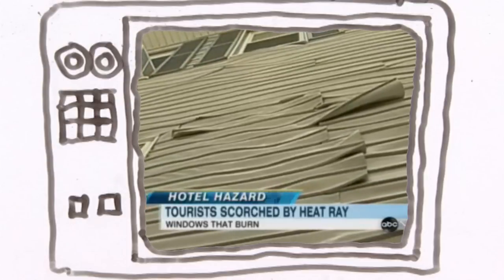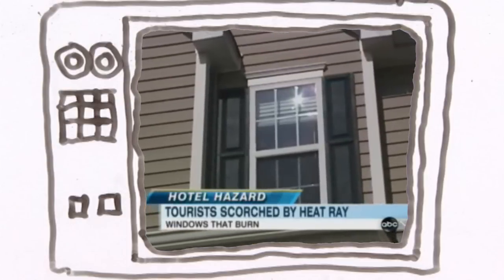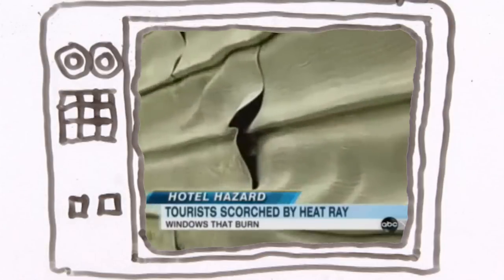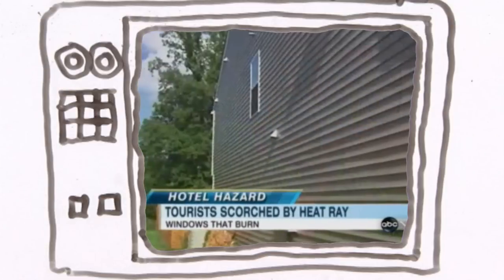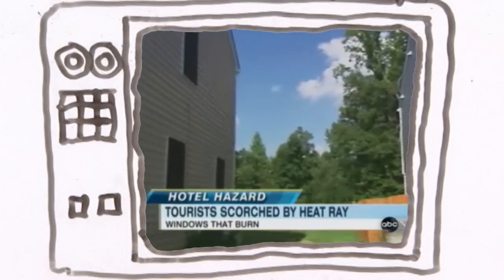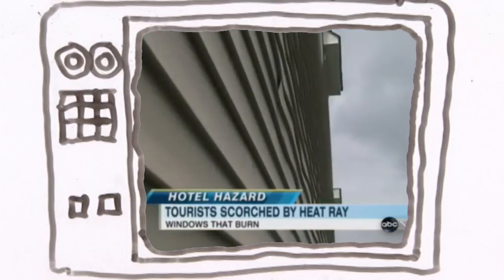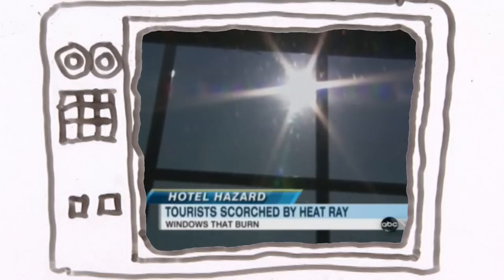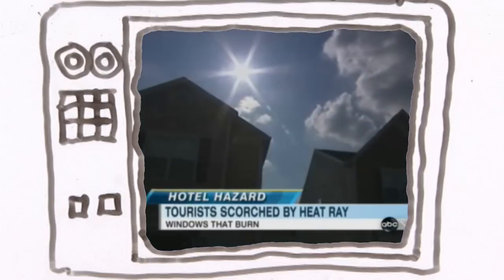Some homeowners complain that their neighbors' efficient double-pane windows can act like a magnifying glass, melting their vinyl siding. I can feel the burning in the back of my hand. The Vinyl Siding Institute points out the extraordinary reflected heat can damage all sorts of surfaces, not just siding. And the Window and Door Association says it is studying the phenomenon.